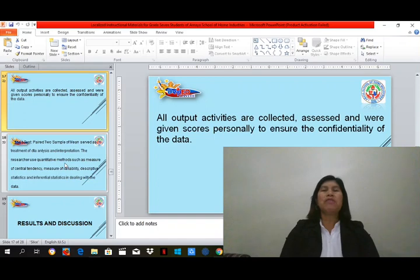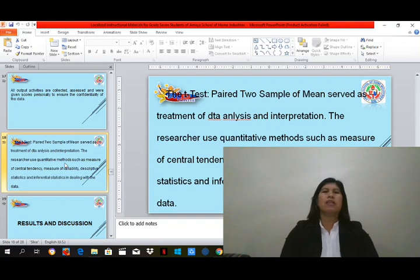All output activities are collected, assessed, and were given scores personally to ensure the confidentiality of the data. The test paired to sample of means served as treatment of data analysis and interpretation. The researcher uses quantitative methods such as measure of central tendency, measure of variability, descriptive statistics, and inferential statistics in dealing with the data.